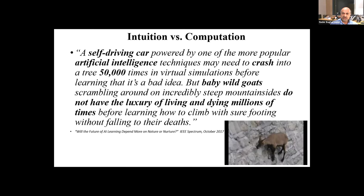From IEEE Spectrum, October 2017: a self-driving car powered by one of the popular AI techniques may need to crash into a tree 50,000 times as part of training. But a baby wild goat cannot afford to do that — it has to survive without going through that crashing sequence. What is it about biological systems, in this case a baby goat, that can survive this kind of learning? That intuition that a three-year-old has, we cannot copy yet. Some government agencies are looking at AI 2.0 where intuition is being considered, but we're at a very early stage.